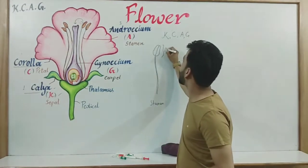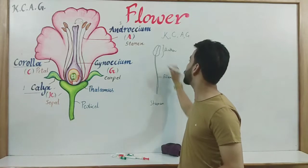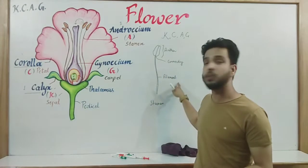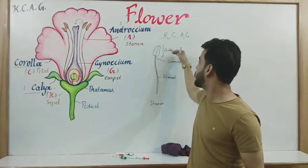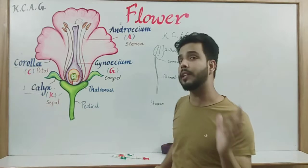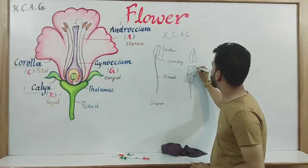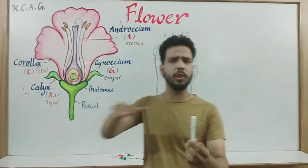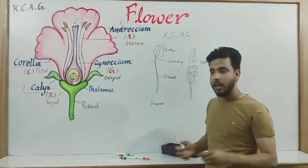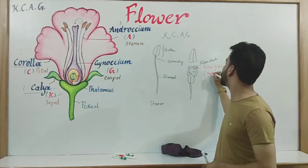In each stamen there are 3 parts. The upper part of the stamen is known as anther, the long thread-like part is termed as filament, and the part which attaches the anther and filament is known as connective. The anther is further divided into 2 lobes called anther lobes. Inside the anther lobes there are pollen chambers, and these pollen chambers produce pollen grains, which are the male gametes of a plant, also known as microspores.